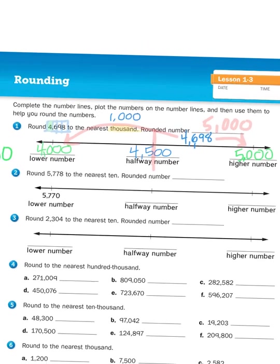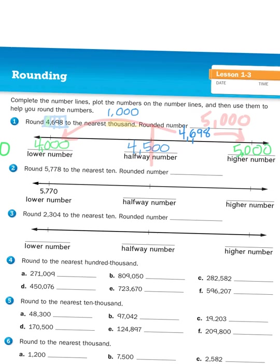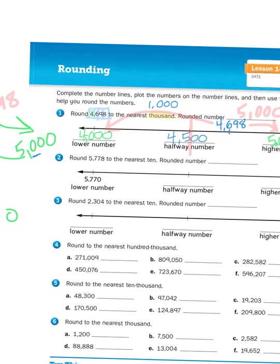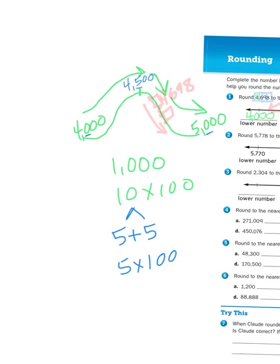Again, using that roller coaster model: 4,698 is way past the halfway point. If I was a roller coaster car, gravity would be pulling me down the hill to the next place value. 4,698 rounds up to 5,000. Now that's the 1,000's place value. Number 2 asks you to round to the nearest 10, which is a completely different model.